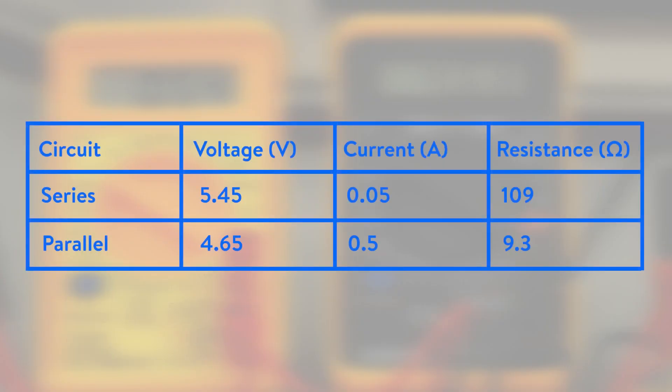Your results should show that when resistors are connected in series, the resistance of the circuit is equal to the sum of the two resistors. When they're connected in parallel, the total resistance is less than the value of either resistor.